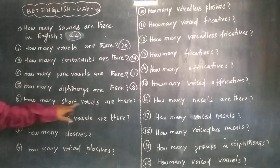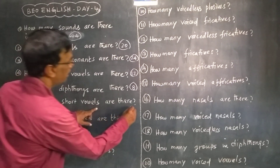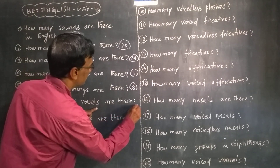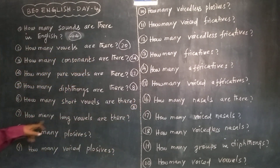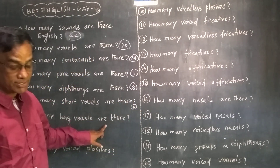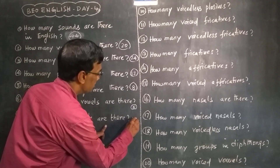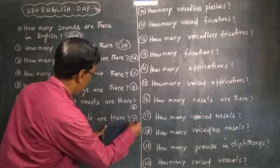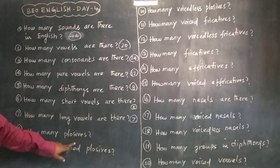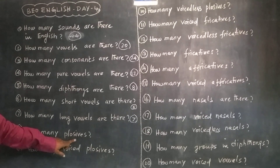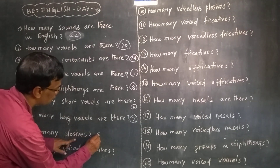How many short vowels are there? There are 5 short vowels. How many long vowels are there in English? There are 7 long vowels. How many plosives? There are 6 plosives.